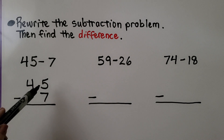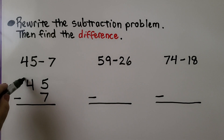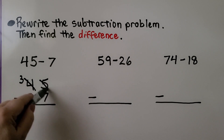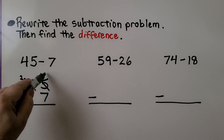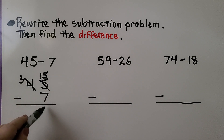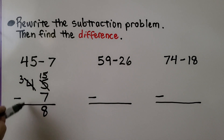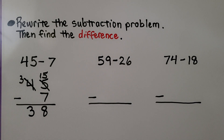We have five ones and we want to take seven away, and we don't have enough. So the tens digit becomes three tens and the ones become fifteen ones. Fifteen minus seven is equal to eight. Three tens minus nothing — we just bring it down — so it's equal to thirty-eight.